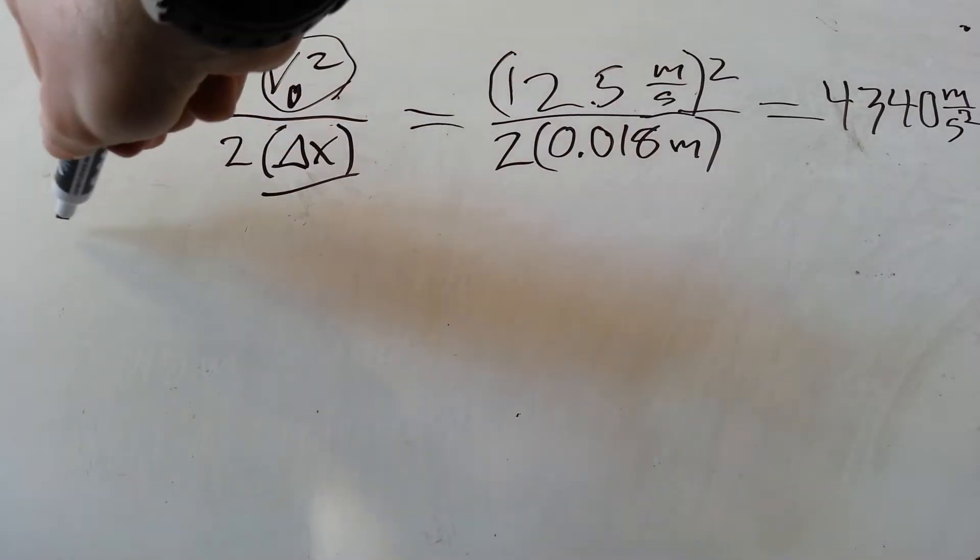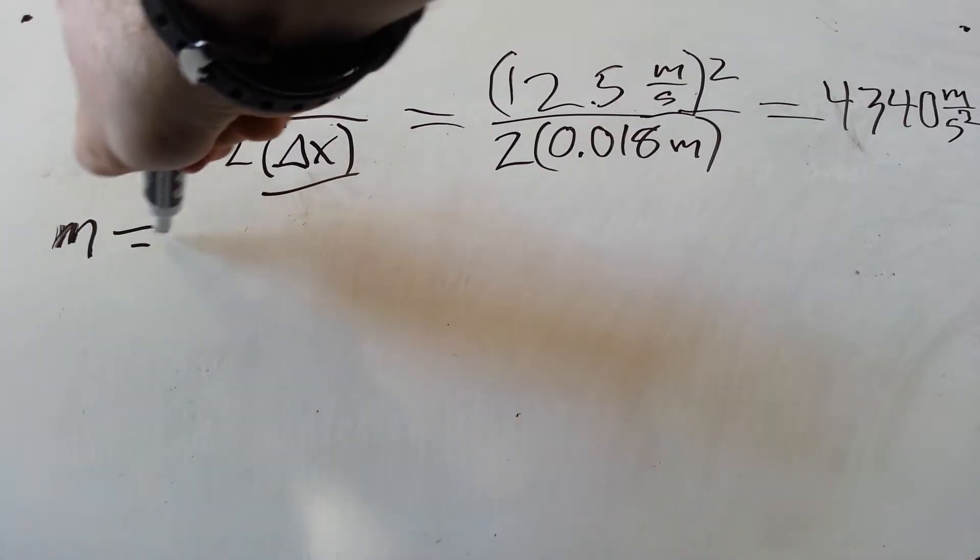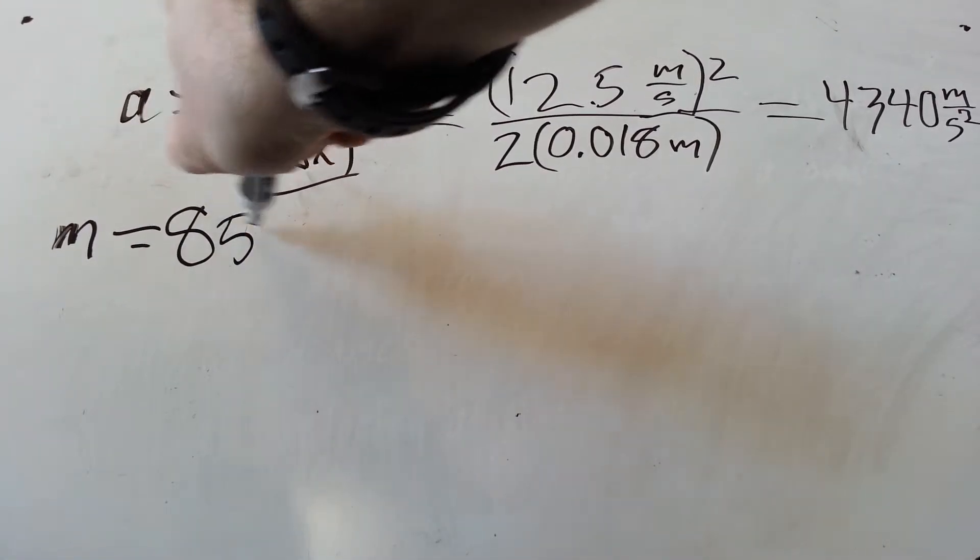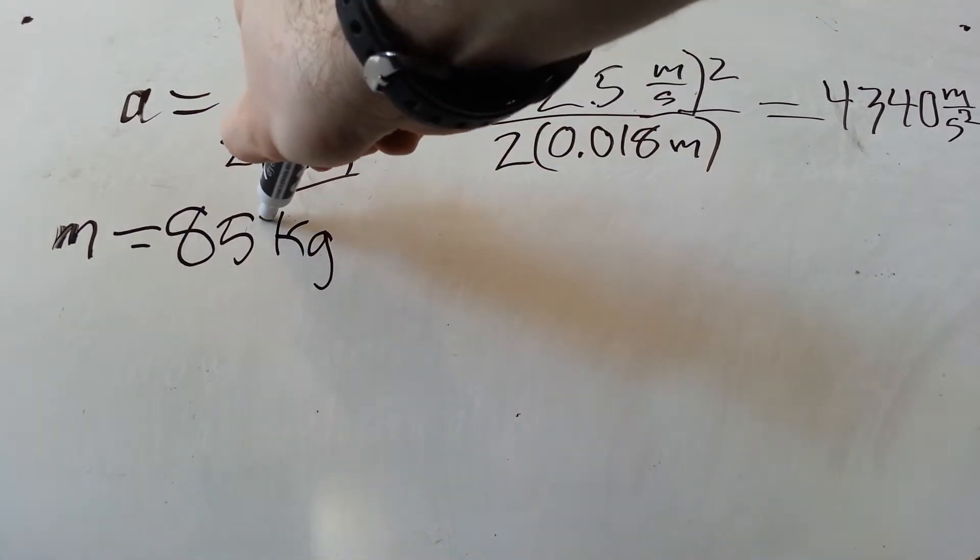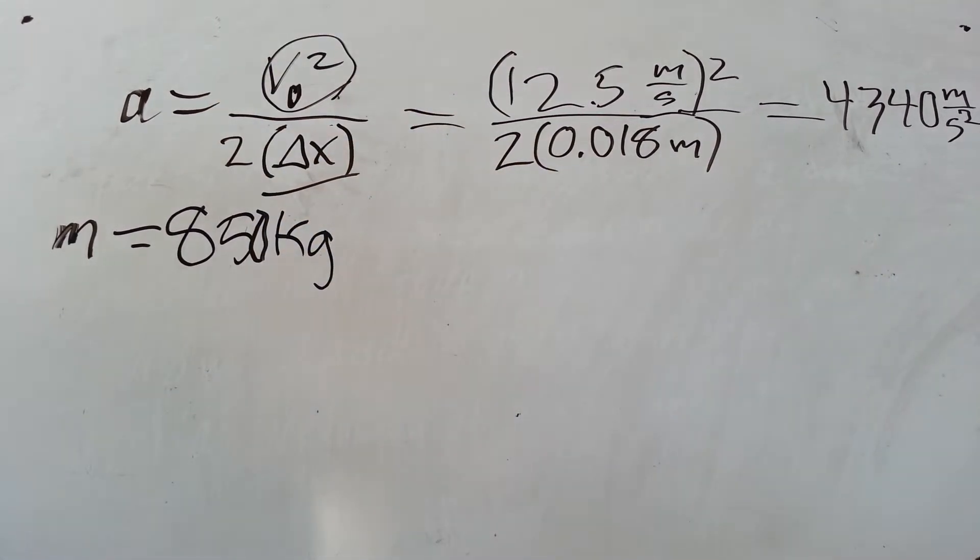We have the mass, because they gave it to us earlier. Left off a zero. That's kind of important.